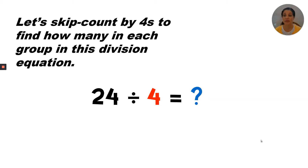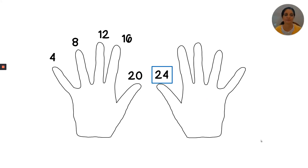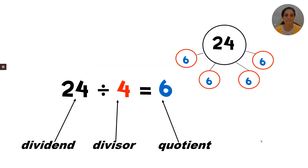Let's skip count by fours to find how many in each group in this division equation. Are you ready? Four, eight, twelve, sixteen, twenty, twenty-four. The answer is six. So we know that how many in each group is six. 24 divided by four equals six.